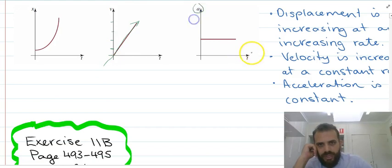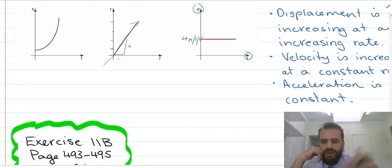That translates into my acceleration graph. So if the gradient of that is, say, four, then that means the acceleration is four meters per second per second, or kilometers per hour per hour, or centimeters per minute per minute, whatever it might be. Another way to write that is four meters per second squared.